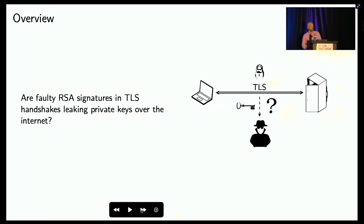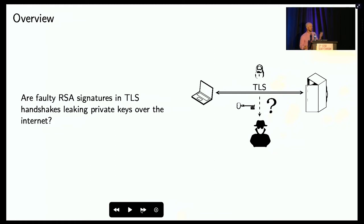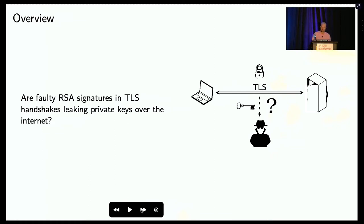To answer that question, we collected billions of RSA signatures and found that servers are indeed leaking their private keys. We found more than 100 private keys, including several keys for real sites — including Baidu.com, one of the largest websites in the world.